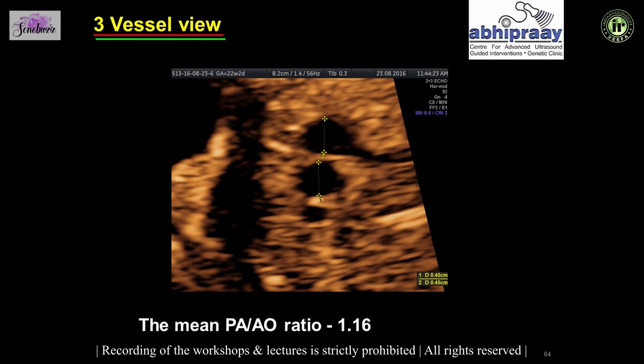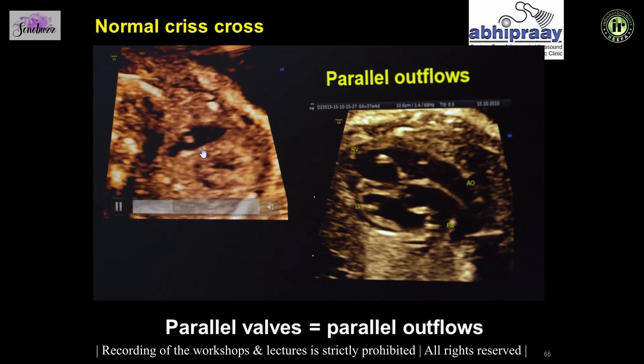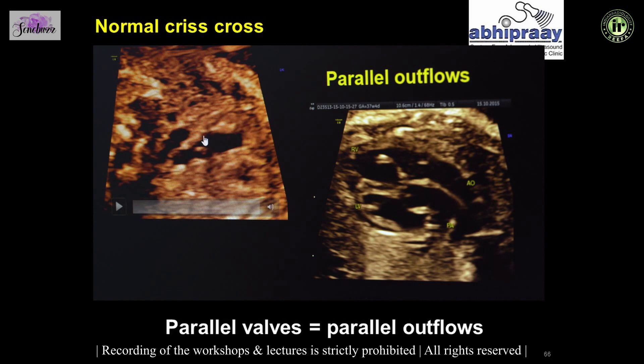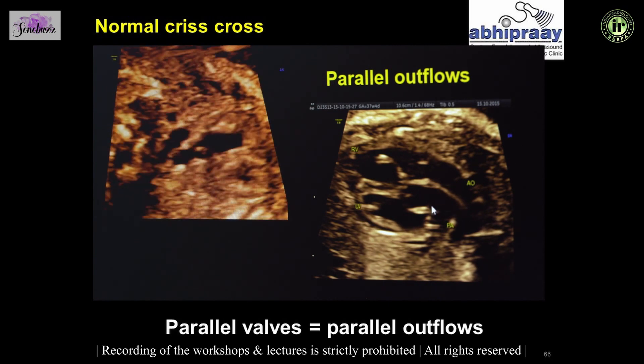In the three vessel and three vessel trachea views with color Doppler, both vessels should be of equal size and show antegrade flow. Any discrepancy in flow direction indicates a valvular abnormality of the heart. The PA-to-aorta ratio is normally 1.16 — any discrepancy in sizes of the PA or aorta points to a valvular abnormality. You should assess vessel size, alignment, arrangement, number, and location, and if anyone shows turbulent flow, it points to an abnormality. Also look for the crisscross of the great arteries immediately after they originate from the ventricles.